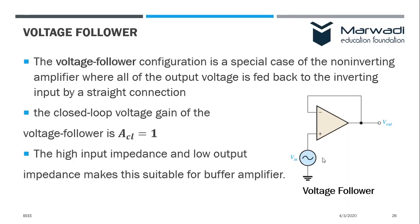So this is the purpose of the low output impedance. If we get sufficient current, then we can drive the other load.